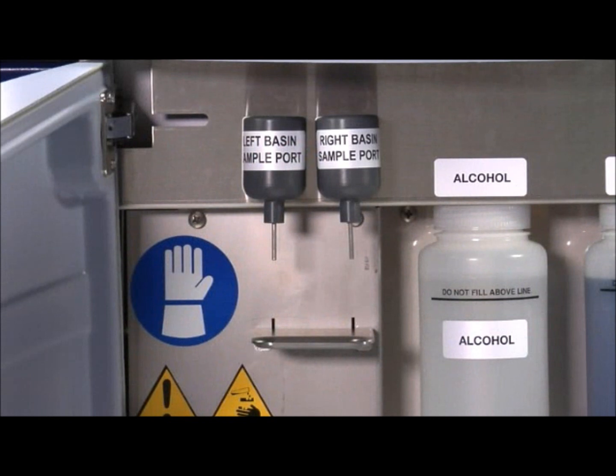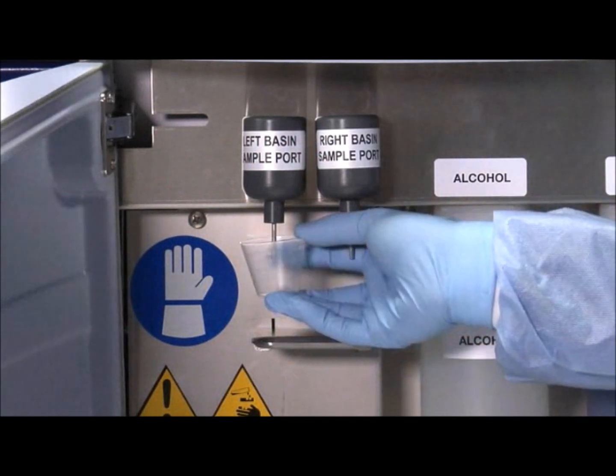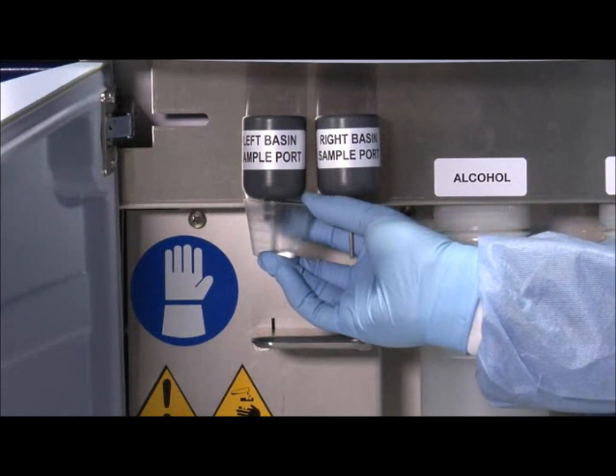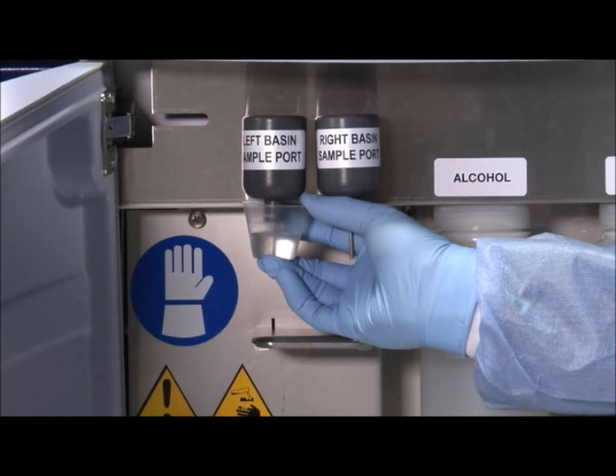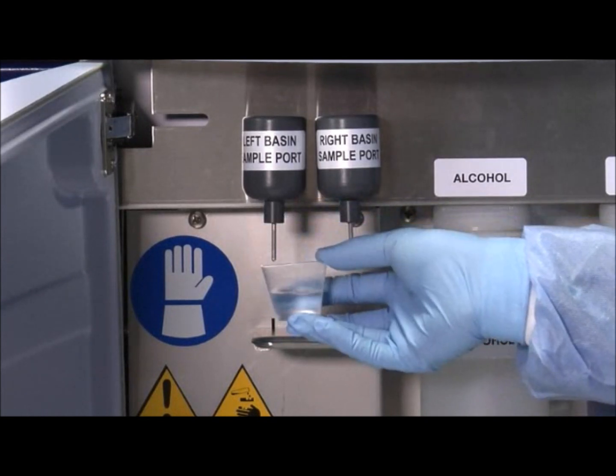Open the front access door and take a sample of disinfectant from the sample port. This is done by pressing a sample cup up against the metal prong. Fluid will be dispensed into the cup.